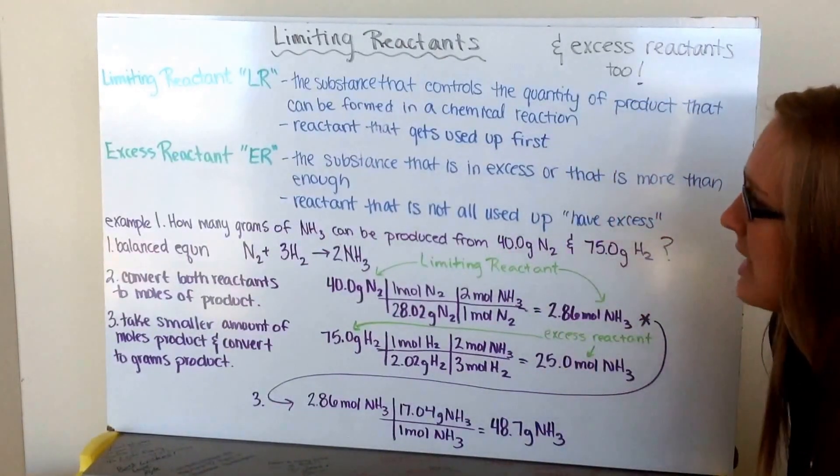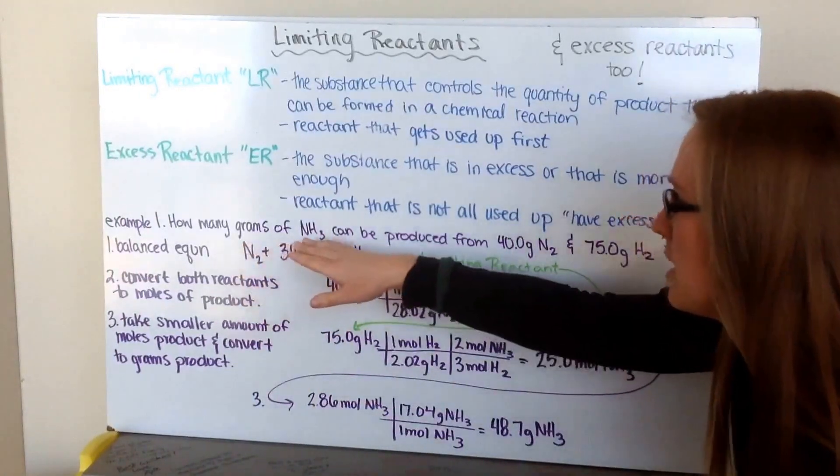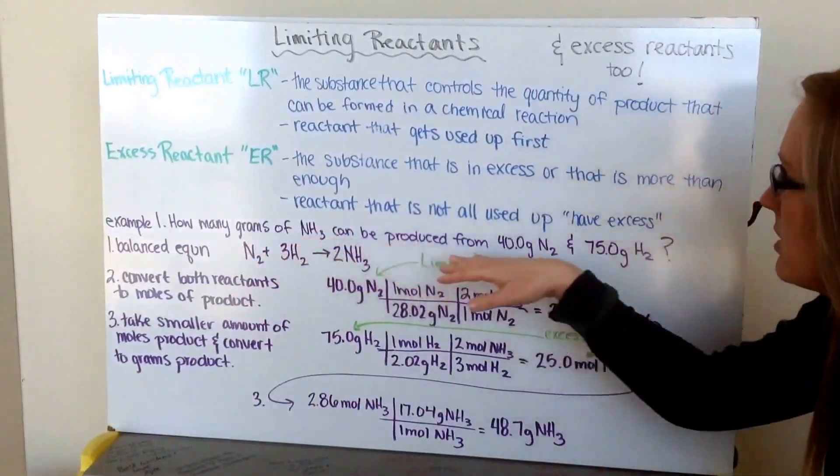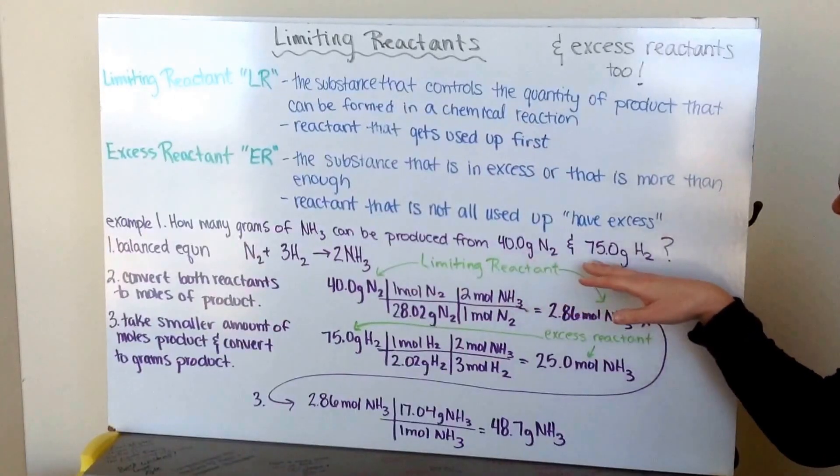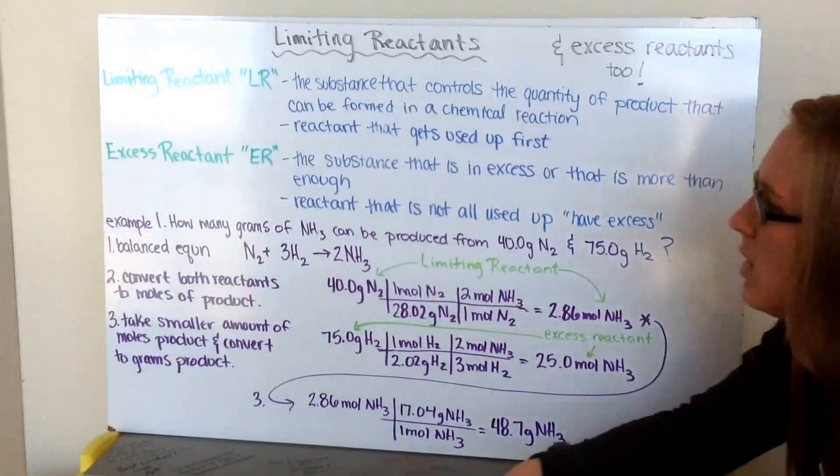So, let's go through an example. How many grams of ammonia, NH3, can be produced from 40 grams of nitrogen and 75 grams of hydrogen gas? Well,